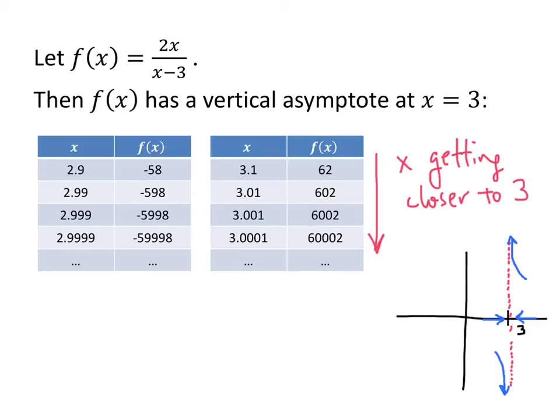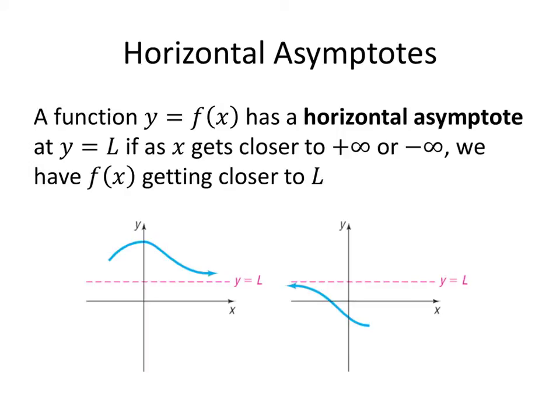And I can tell this by making a table of values. Now, what about horizontal asymptotes? It's the same kind of idea, but this time the x value is the one going off to plus or minus infinity, and then it's the y value that's getting closer and closer to a particular value. That's the definition of a horizontal asymptote — but let's see how we actually compute it.